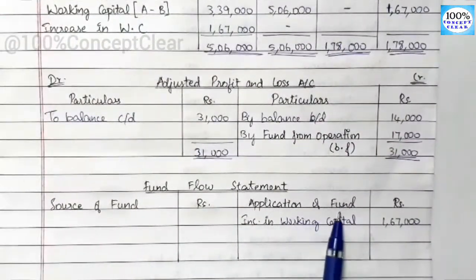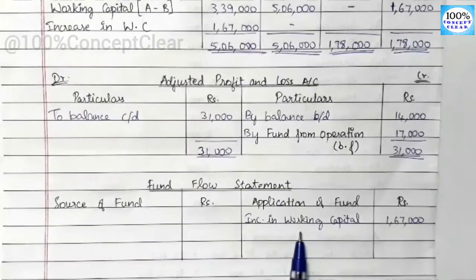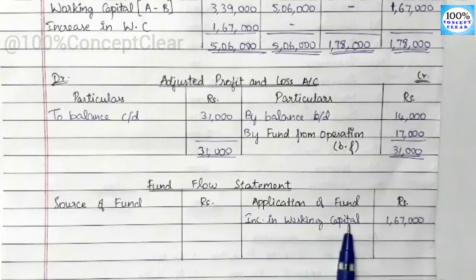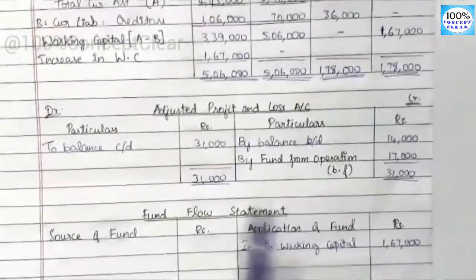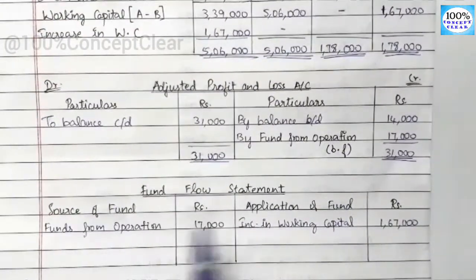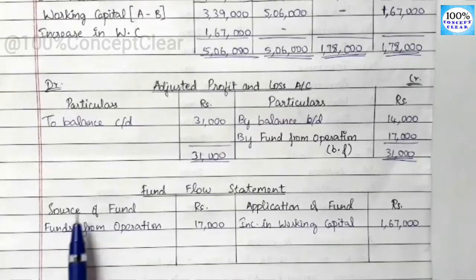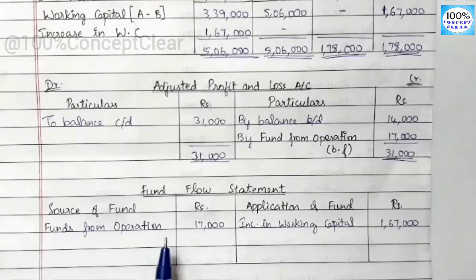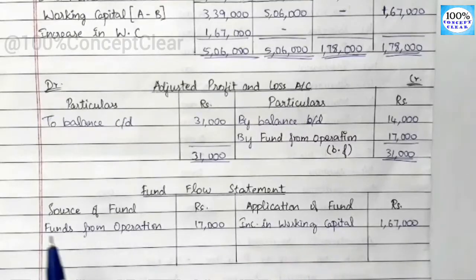Working capital increasing means the business is using funds for daily operations. That is why an increase in working capital is classified as an application. So we note 1,67,000 under applications. From the adjusted profit and loss account, fund from operations is 17,000, and this goes into the sources side of the fund flow statement.